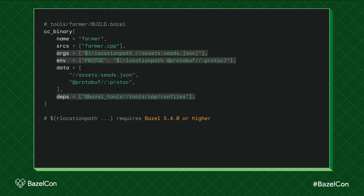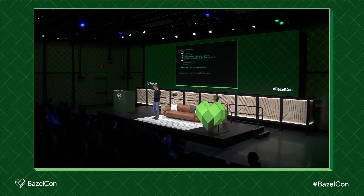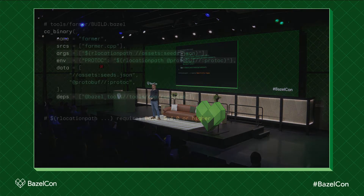Here we have our farmer binary upgraded to support run files in a backwards compatible way. Cherry-picked some features into the 5.4 release so that people could have an easier migration path. You may know location expansion — these dollar patterns from something like rootpath, execpath, or location. If you mention rlocation_path anywhere in an argument or an env setting on a rule, it will resolve to the path we just saw: repo name, package, and so on, with all repository mappings applied. That's the thing you need to pass to rlocation. So here in this example, we have a dependency on the C++ run files library, and we explicitly pass in the rlocation paths of these two files.